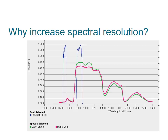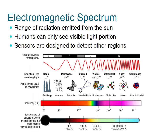Increasing spectral resolution is limited by the electromagnetic spectrum, which is the range of radiation emitted from the sun. The major portions of the electromagnetic spectrum include radio, microwave, infrared, visible, ultraviolet, x-ray, and gamma rays. Humans can only see the visible light portion in the very middle. The three main divisions within the visible light portion are the red, green, and blue.